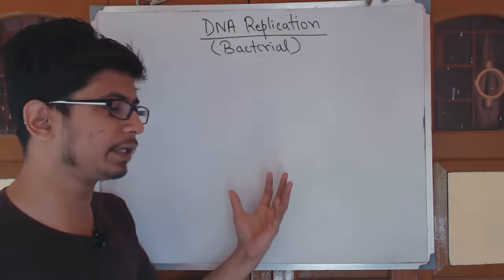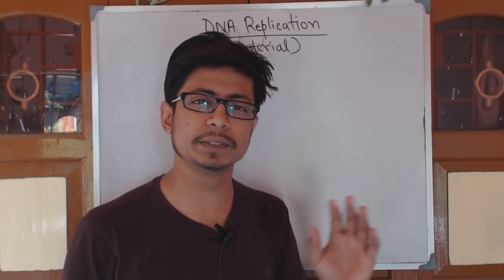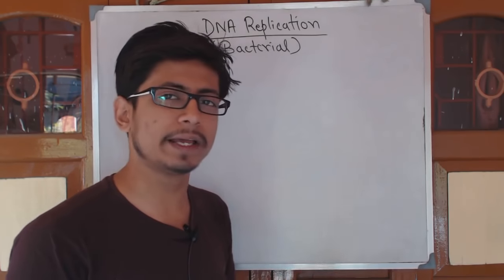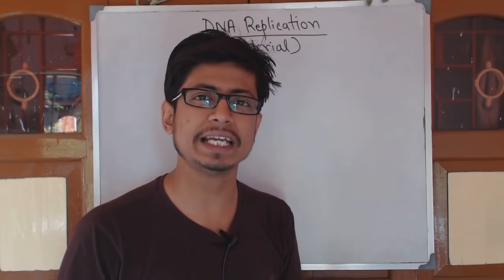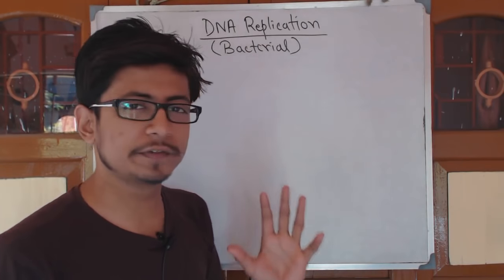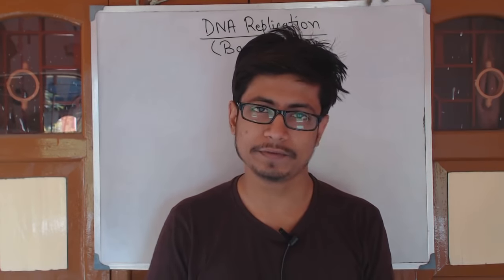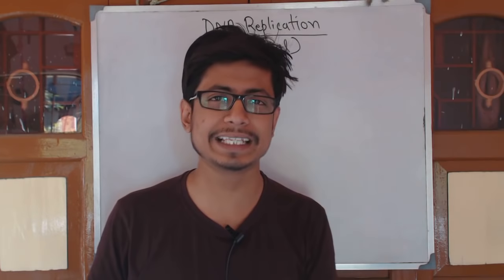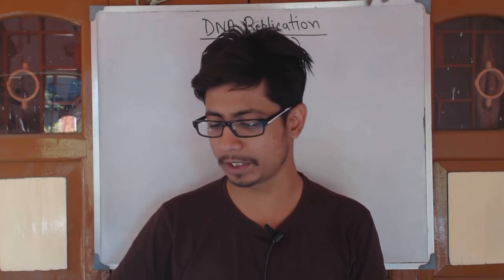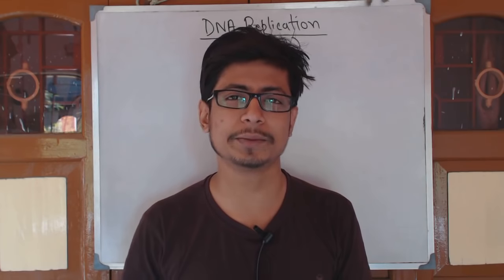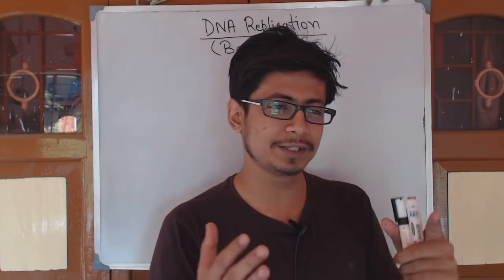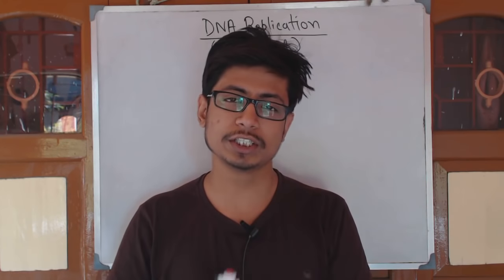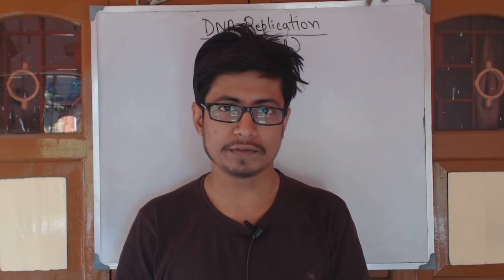Prokaryotic replication examples are bacteria, and in this case we take the simple example of Escherichia coli, or E. coli bacteria. We will see how DNA replication takes place inside an E. coli cell. There are no strict natural stages in the replication process — we name those stages so that we understand the topic very well. We divide the whole process into three different stages: initiation of replication, elongation of replication, and termination of replication.